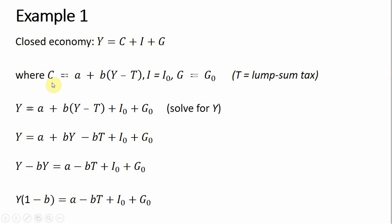The consumption function will be represented by this equation here. Y is income, T is going to be lump sum taxes, like a lump-sum tax. And we have a certain level of investment spending and a certain level of government spending.